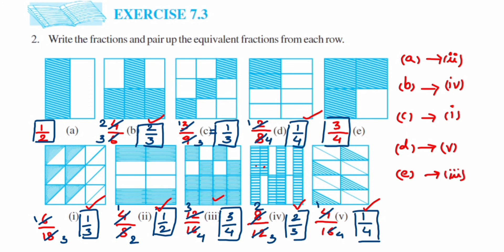So this is how you solve it: first write all the fractions, reduce them to the lowest form, and check which fractions are equal. I hope it's clear. If you have any questions or doubts, you can drop a comment below. Thank you so much for watching.